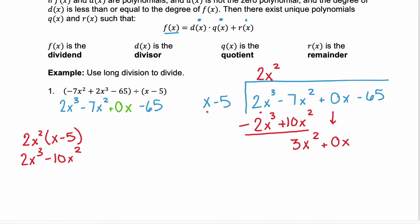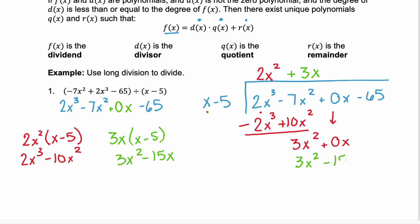Now we start all over. We look at the first term of our divisor, x, and we want to cancel out the 3x squared in our dividend. So x times what gives us 3x squared? That would be plus 3x. Move over to the left and do that multiplication: 3x times x minus 5 gives us 3x squared minus 15x. The 3x squareds cancel each other out. 0x plus 15x becomes 15x, and we carry down that constant term of negative 65.